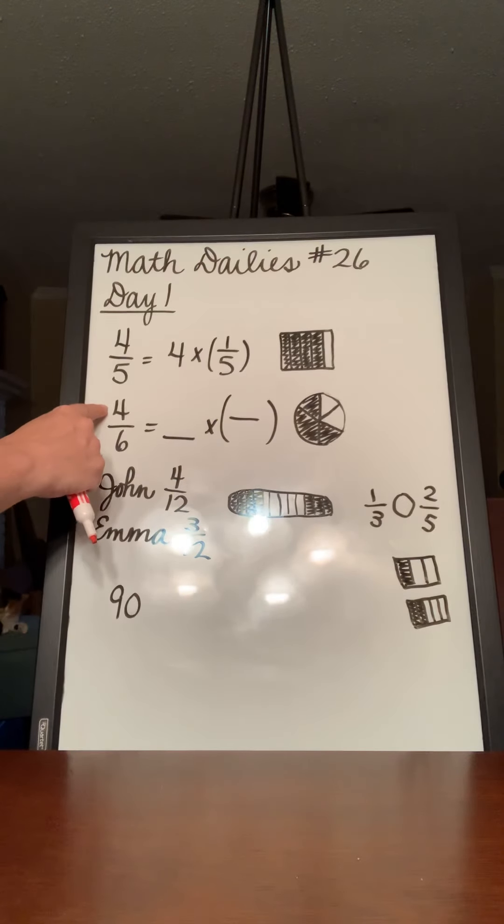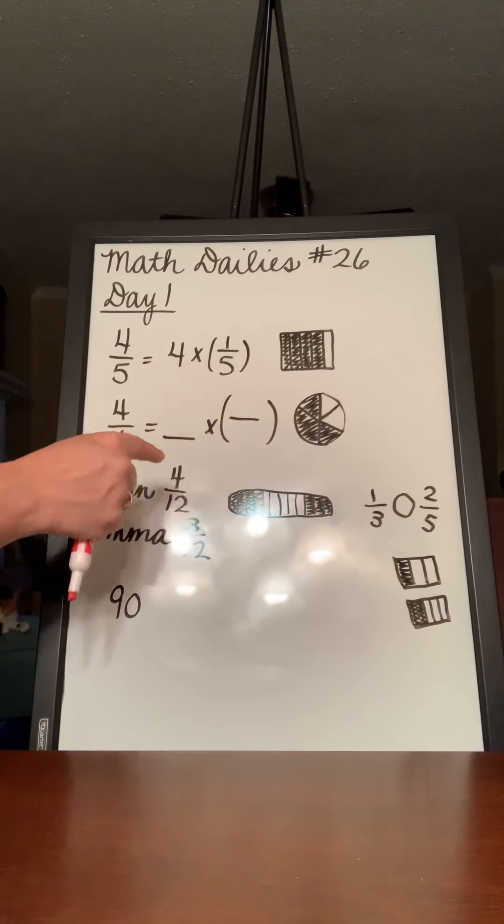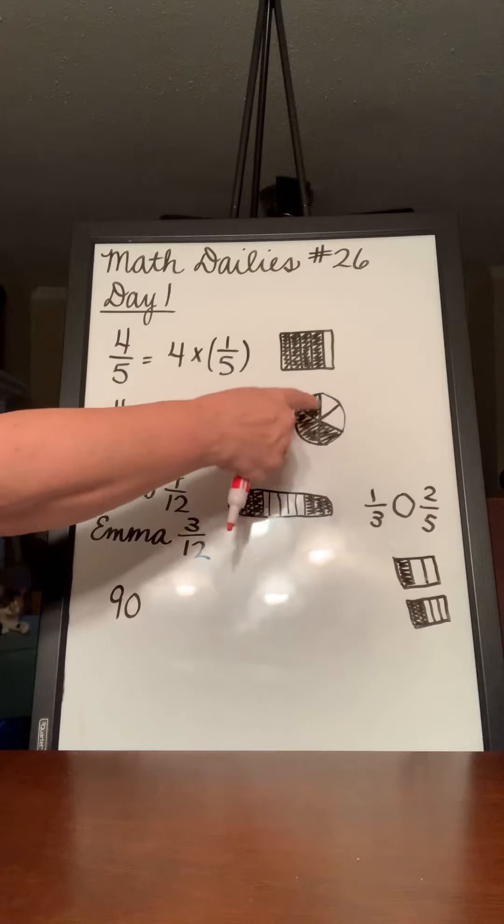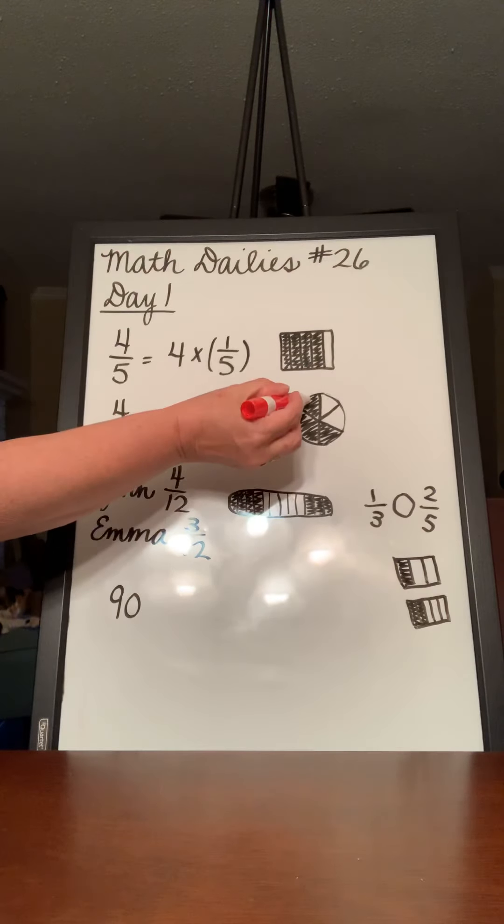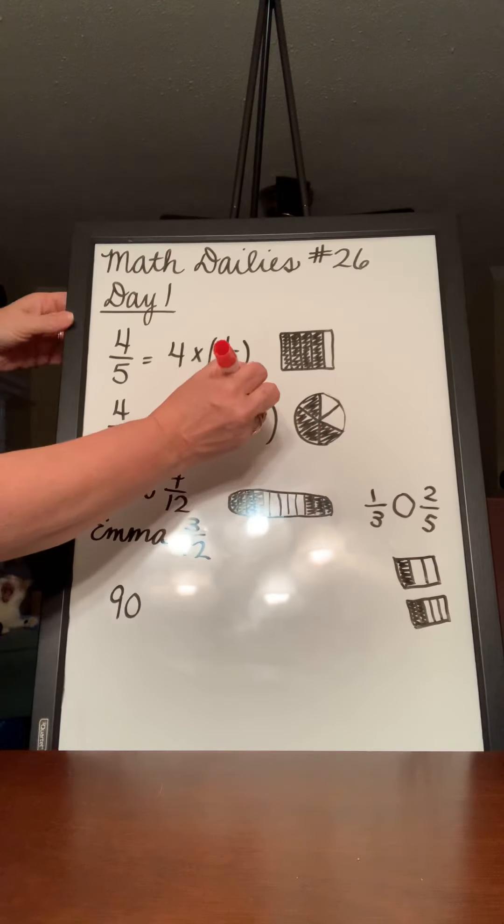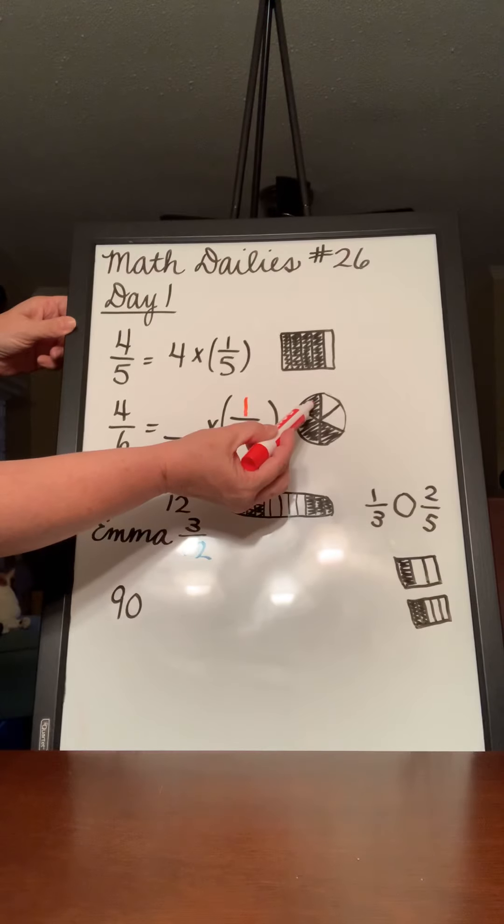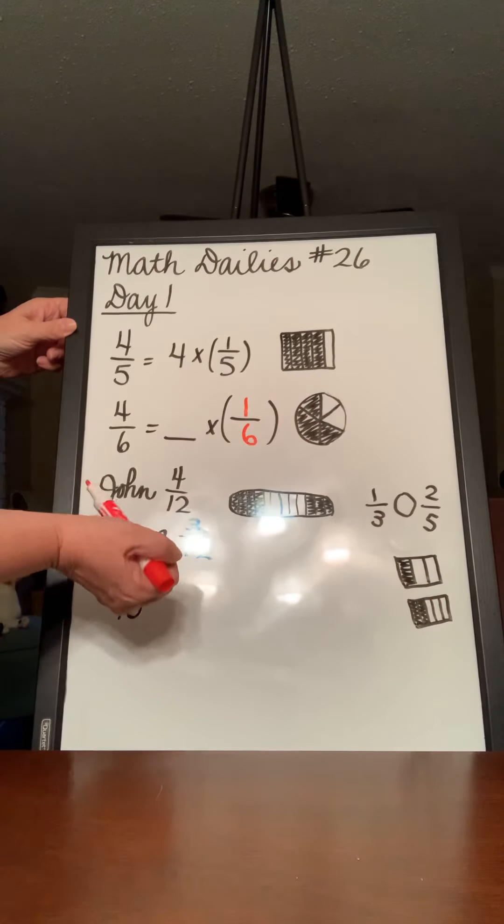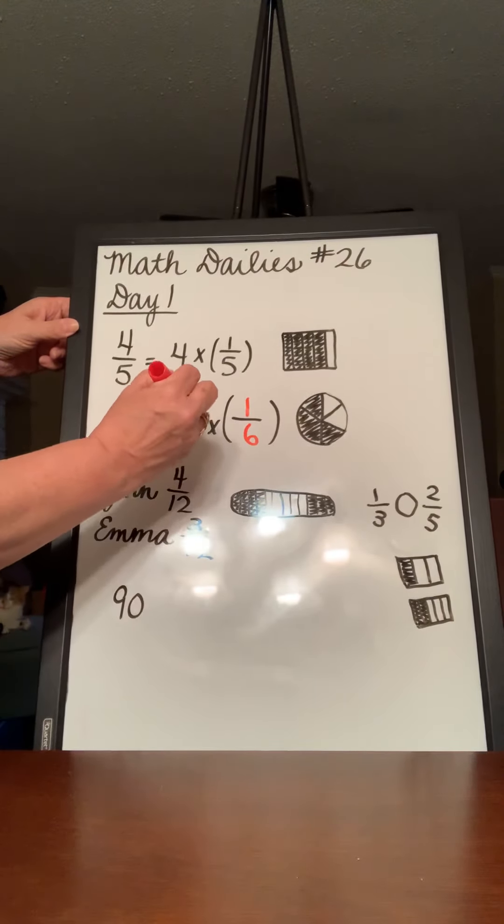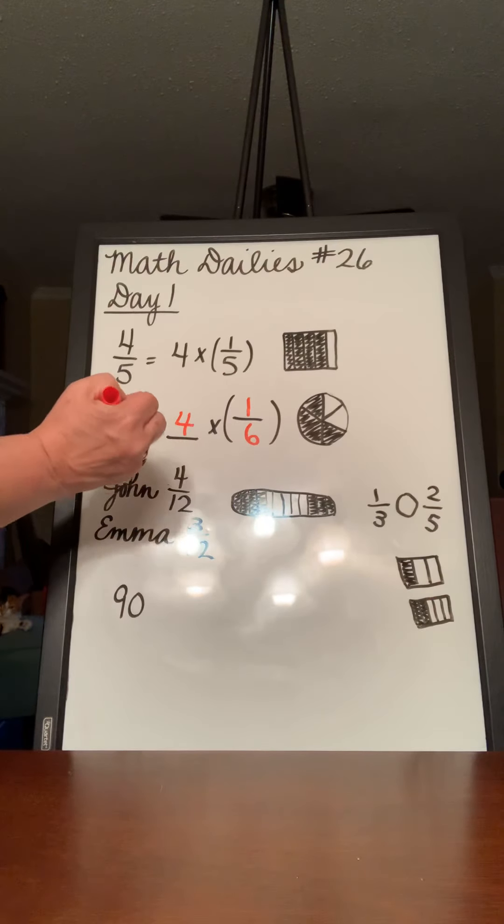So let's look at this one now. If we have 4 sixths, 1, 2, 3, 4 out of 6, then how many 1 sixths do we have? Well, here's 1, here's 1, here's 1, and here's 1. So we're going to multiply by 1 sixths. 1, 2, 3, 4. There's 4 of them.